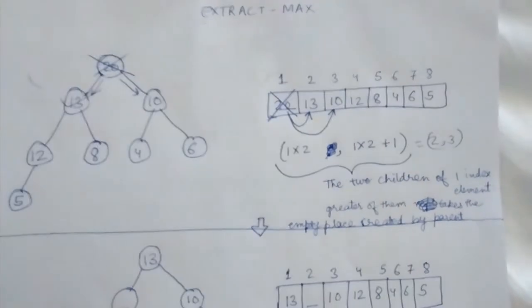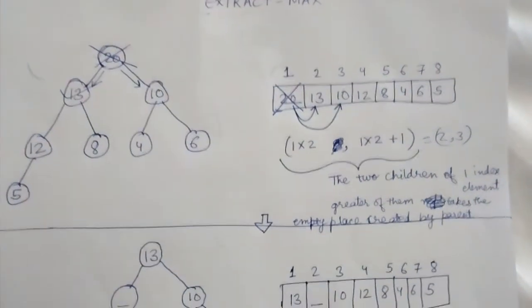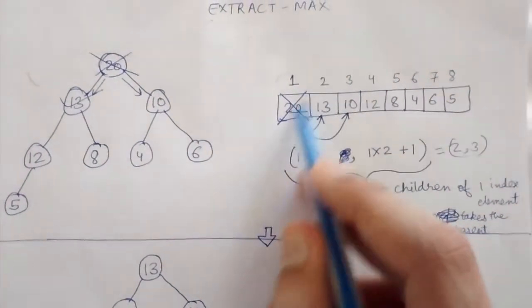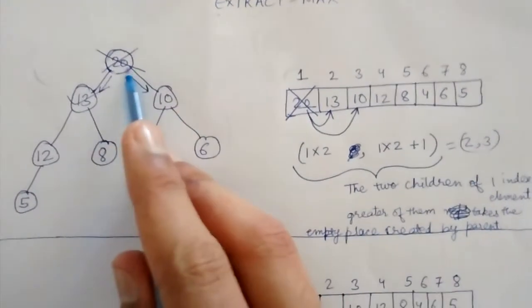We see the two children of V[1], which is 20. This place is blank. We see both children of 20: one is 13, one is 10.